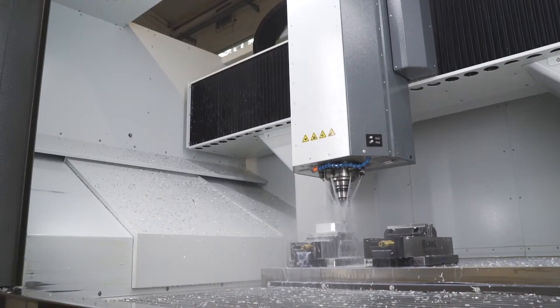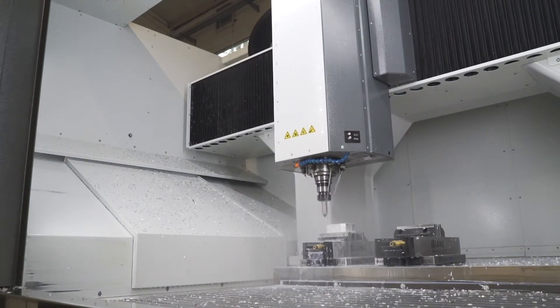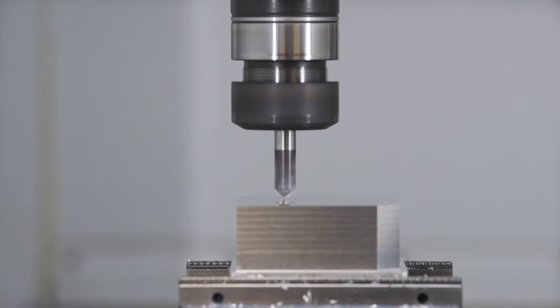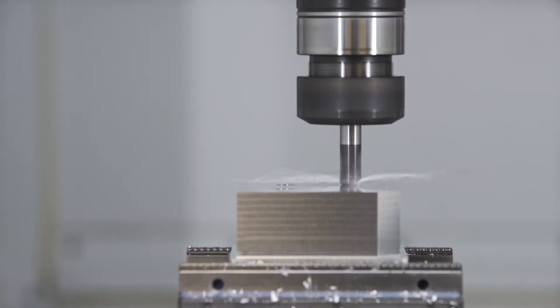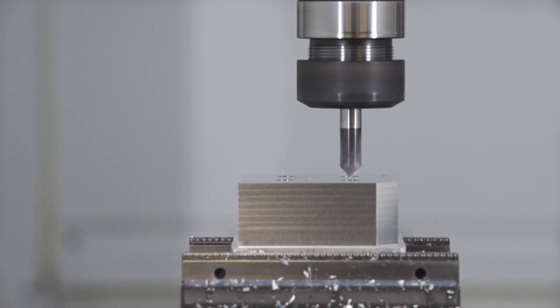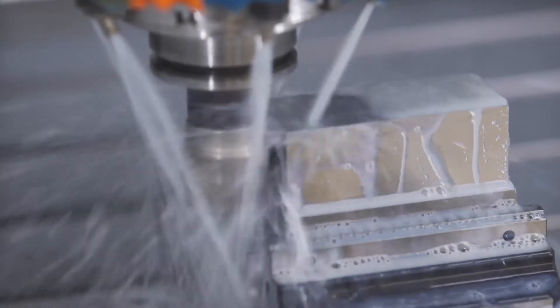To suit specific applications, Kimmler milling machines can be configured to customers' exact requirements. High-speed and high-torque spindles are available with speeds up to 60,000 rpm.